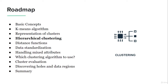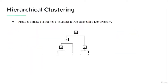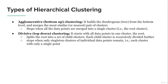Let's talk about hierarchical clustering. Hierarchical clustering is a type of clustering in which we produce a nested sequence of clusters that ultimately forms a tree called a dendrogram. There are two types: bottom-up clustering, also known as agglomerative, and divisive or top-down clustering. In bottom-up clustering, we start from the leaves of the tree and merge the most similar pair of clusters until all data points are merged into a single root cluster.